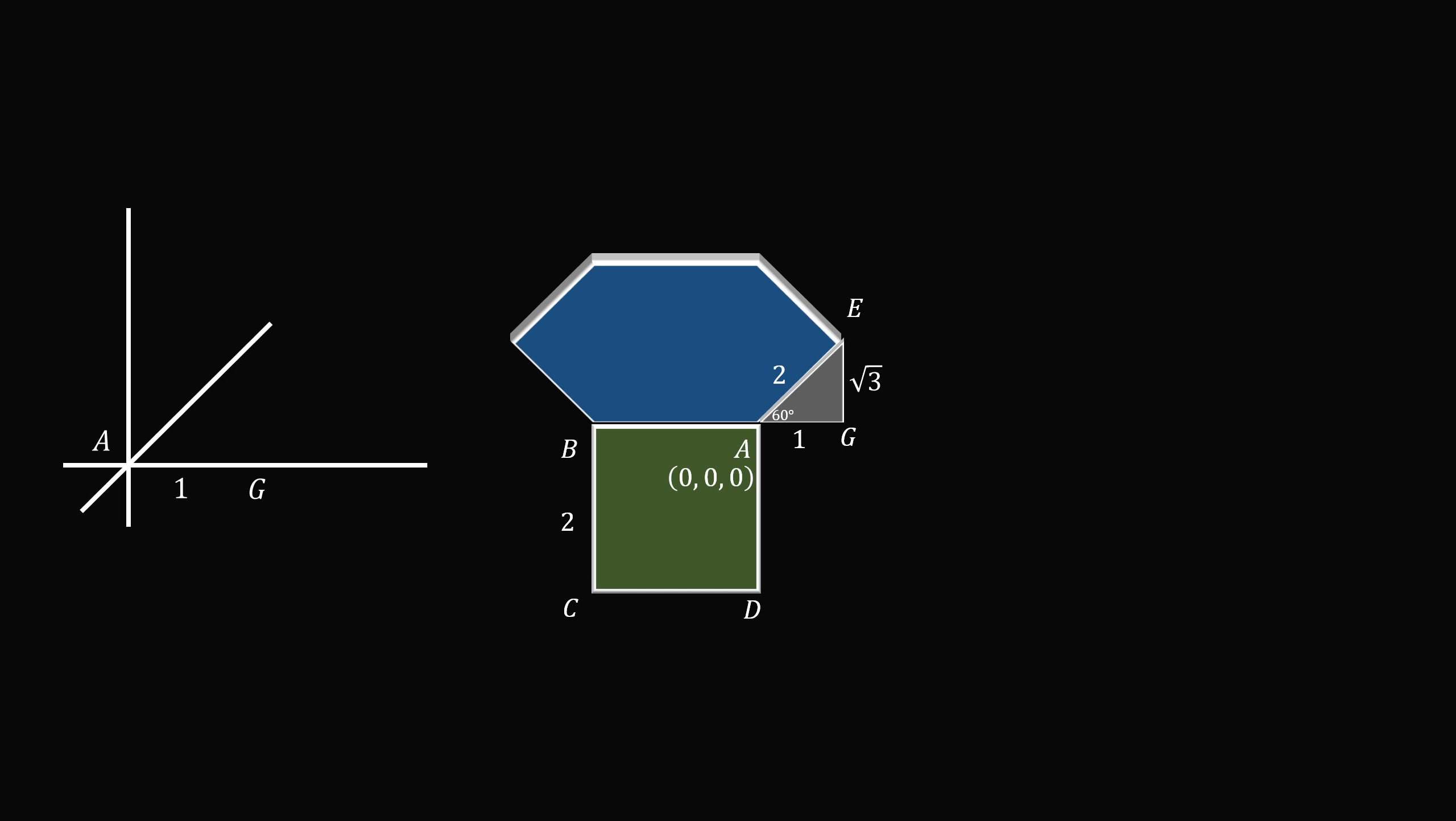We have A which is the origin. One unit over we have G. We now have the point E which is somewhere here. We know that EG has a length equal to the square root of 3. Furthermore, EG has been rotated t degrees from the flat surface, so this angle is equal to t. We now have a right triangle so we can solve for the lengths of the legs. One leg will be the square root of 3 times the cosine of t, and the other leg will be the square root of 3 times the sine of t.